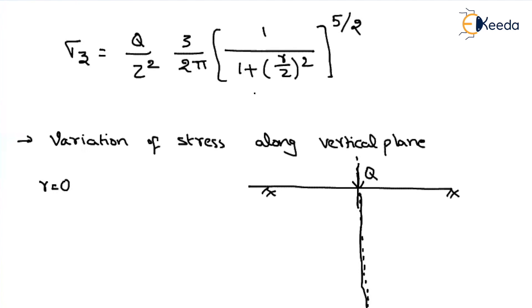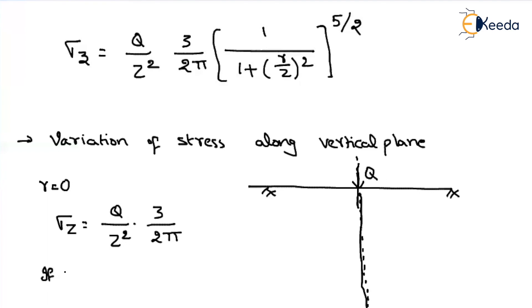If you substitute r equal to 0 into the equation, sigma z can be written as Q divided by z squared into 3 divided by 2 pi. If the load is constant, then 3 divided by 2 pi is also constant, and the normal stress is inversely proportional to z squared. If z is equal to 0, sigma z will come out to infinity according to the equation.